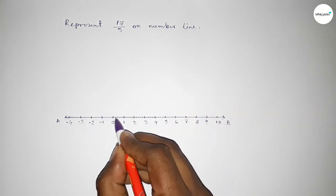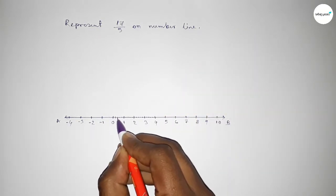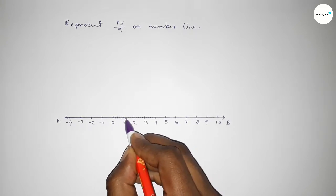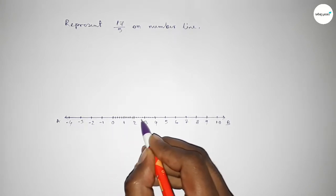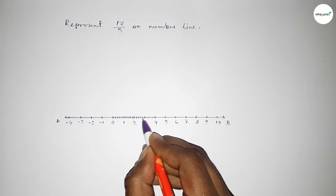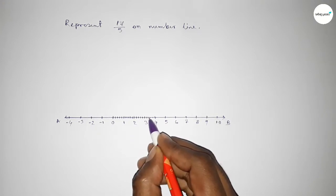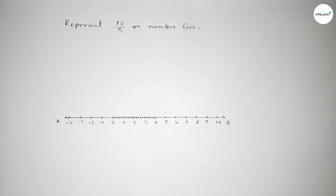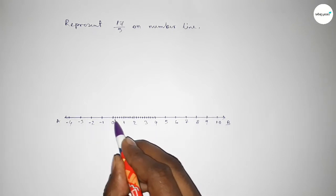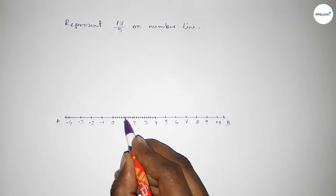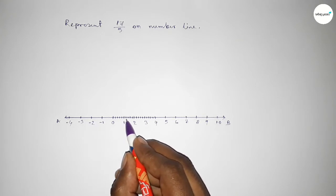Now marking the numbers with a deep color to understand perfectly. This is 1 over 5, 2 over 5, 3 over 5, 4 over 5, 5 over 5, 6 over 5.